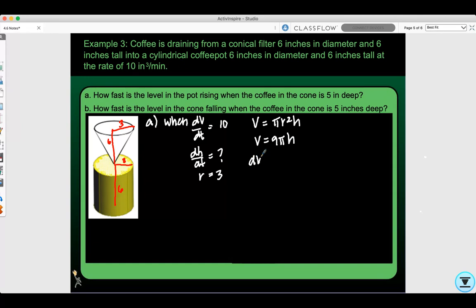Find how the volume is changing with respect to time: dV/dt equals 9π dh/dt. They told us dV/dt is 10, so 10 equals 9π dh/dt. Solving for dh/dt gives 10 over 9π inches per minute. That's how you do part A.